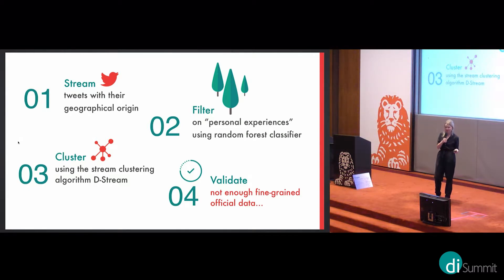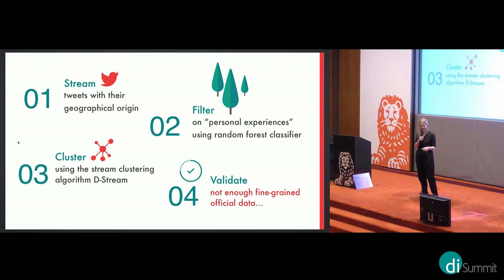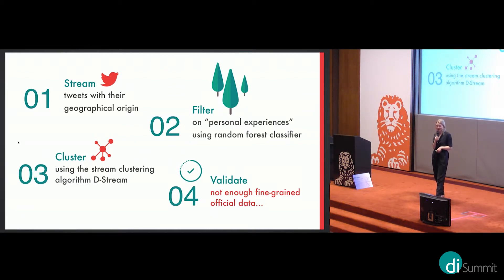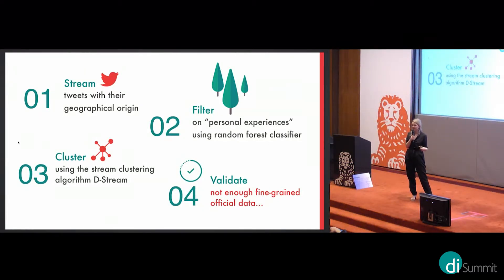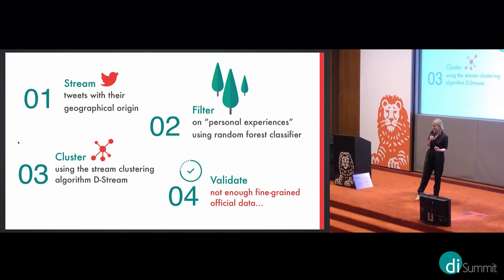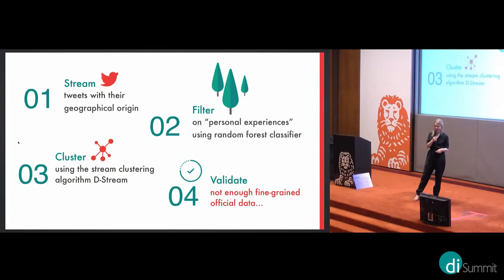After going through the random forest classifier, we only retained tweets that were personal experiences. We then discarded the text and kept just a stream of geographical locations. We applied the D-stream algorithm, a density-based stream clustering algorithm. It takes a new tweet, maps it to a region, and assigns a value corresponding to how long it has been around — this value decays over time. The sum of values gives a measure of density, indicating how many tweets have occurred in that region, then clusters them.